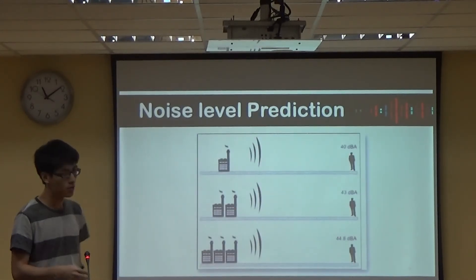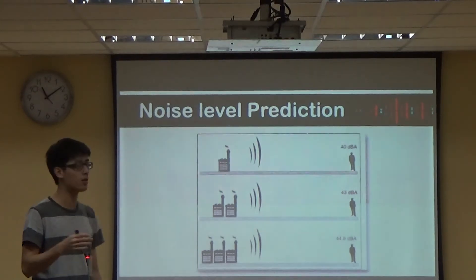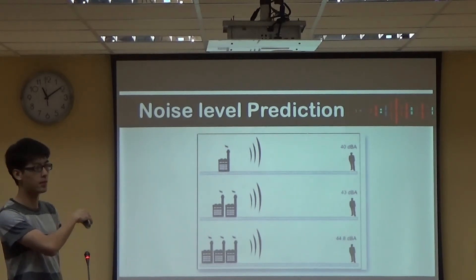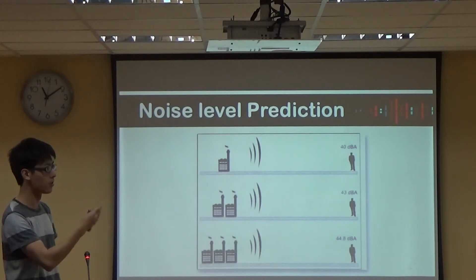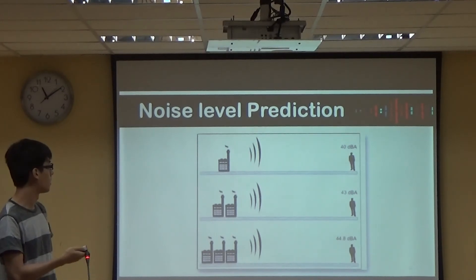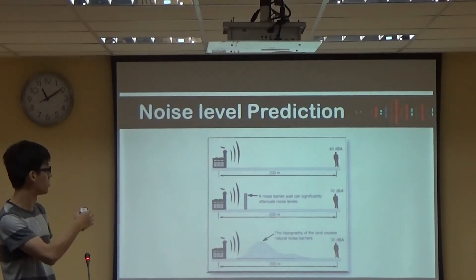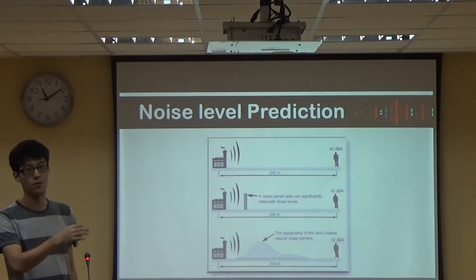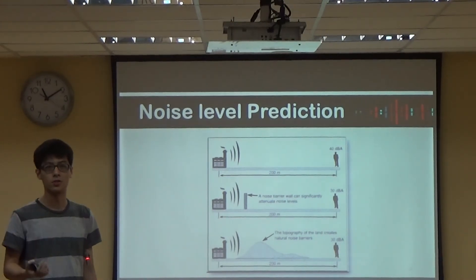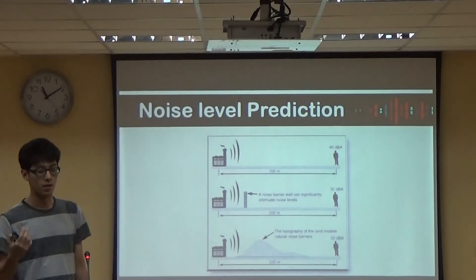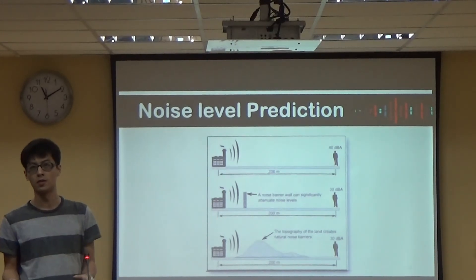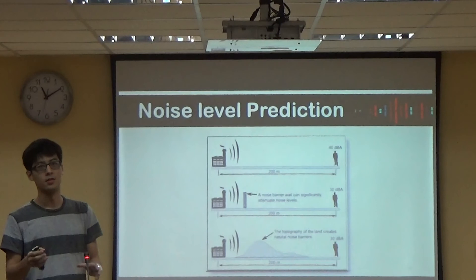The next example shows how the barrier affects noise traveling. When there is no barrier between the receiver and the noise generation, the noise level was measured at 44.8 dB. But if there is a barrier in between, you can actually reduce the noise to a much lower level. We conclude that this program can help industrial practitioners optimize and predict possible noise pollution in the future, and know how to control the noise they generate.